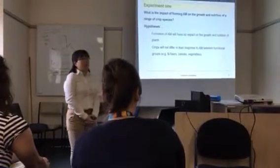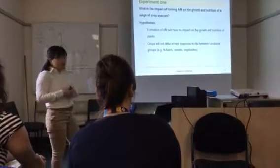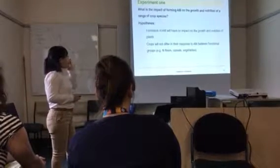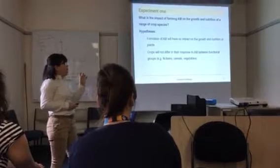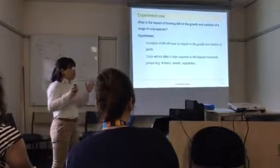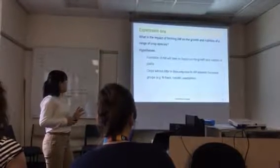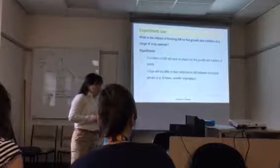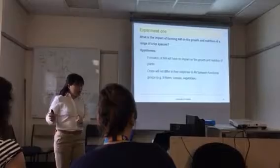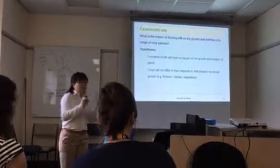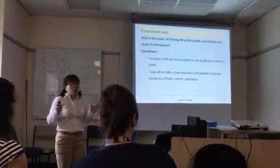So, materials and methods. My study includes four experiments. In experiment one, I want to determine the impact of AM inoculation on the growth and nutrition of a range of crop species. My null hypothesis is that AM formation will have no impact on the growth and nutrition response of food crops, and that crops from different functional groups have no difference in their response to AM.